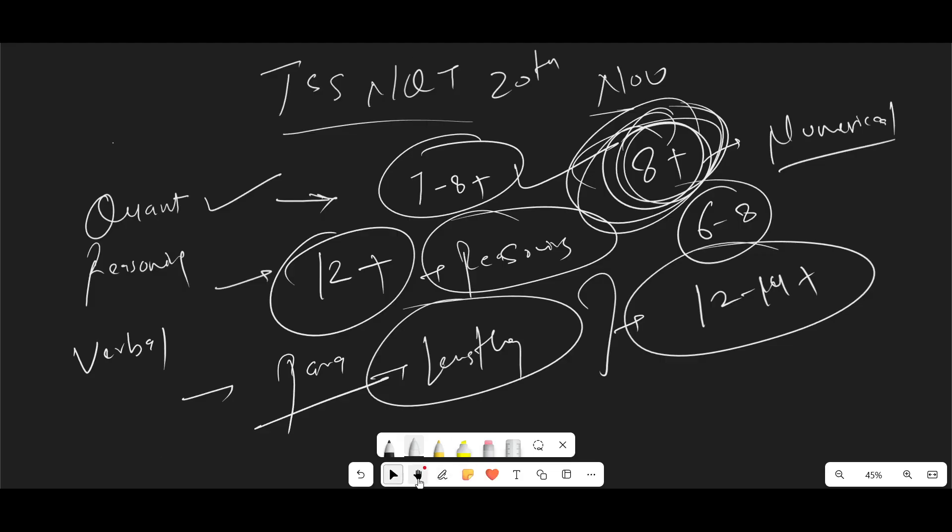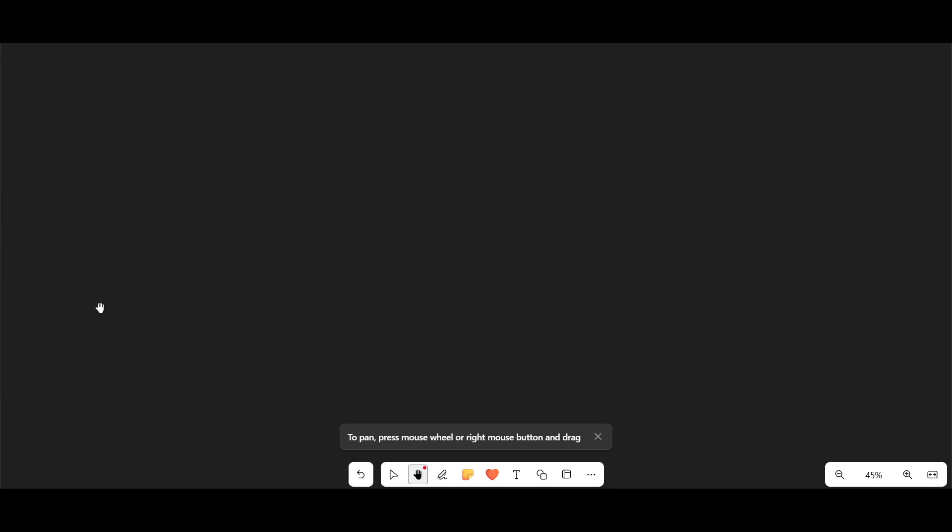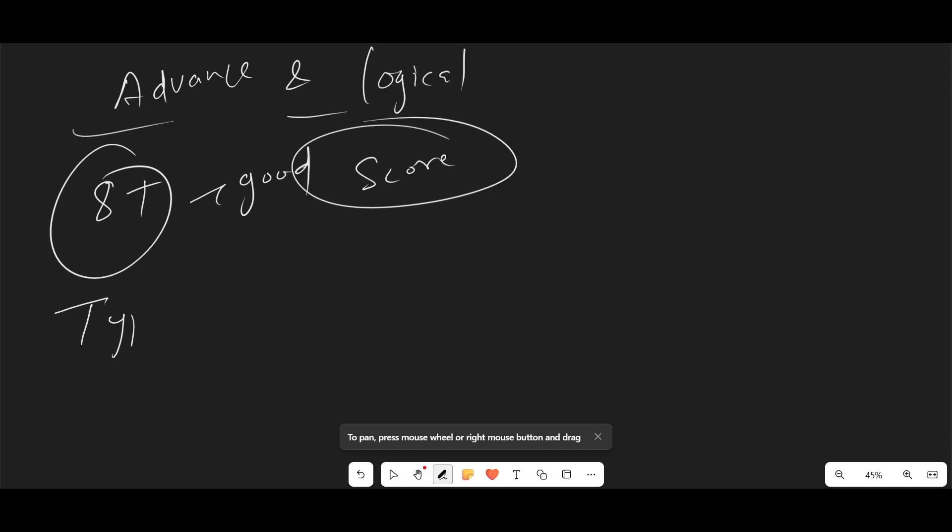Coming to the advance section. In the advanced section, again for advanced aptitude and logical, it was again same as the previous days only. So again, I am saying like eight plus could be a good score. In today's actually session, many questions are from type in the box type. There are so many database question, again.